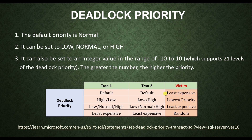If one transaction has high priority and the other has low priority, SQL Server will choose the one with the lowest priority as the deadlock victim. If both transactions have the same priority level, the victim will again be the least expensive one. And if both transactions have the same priority level and the same cost, the deadlock victim is chosen randomly by the SQL Server database engine.